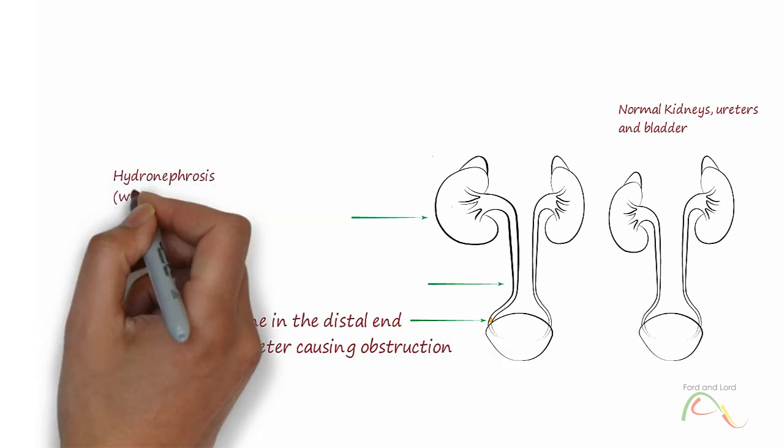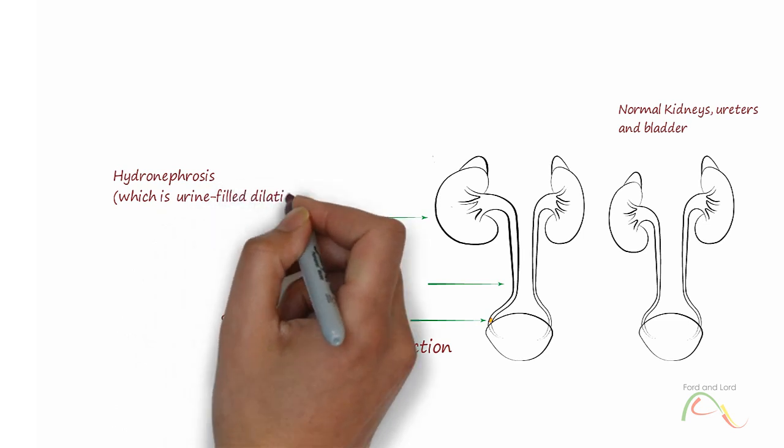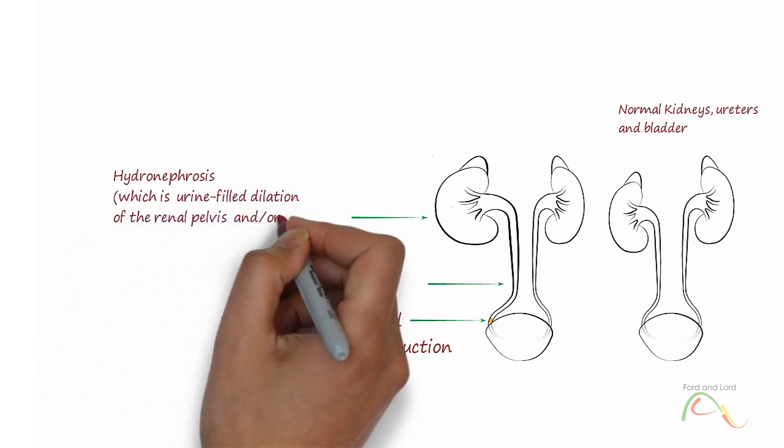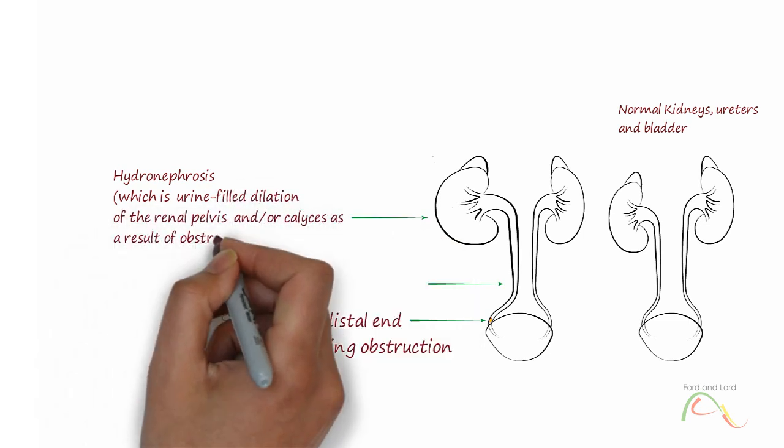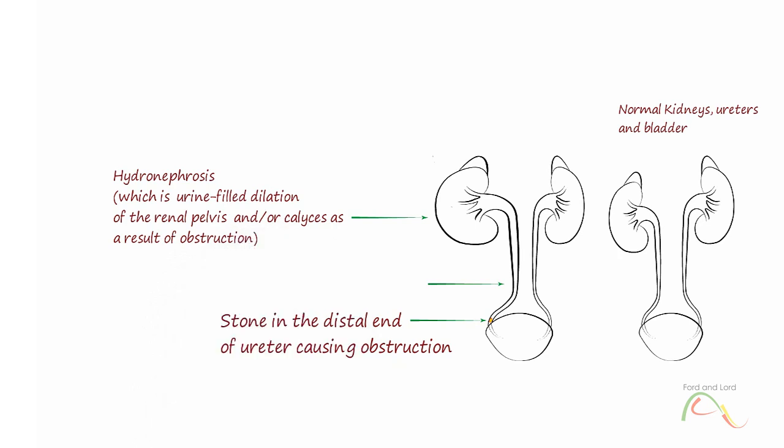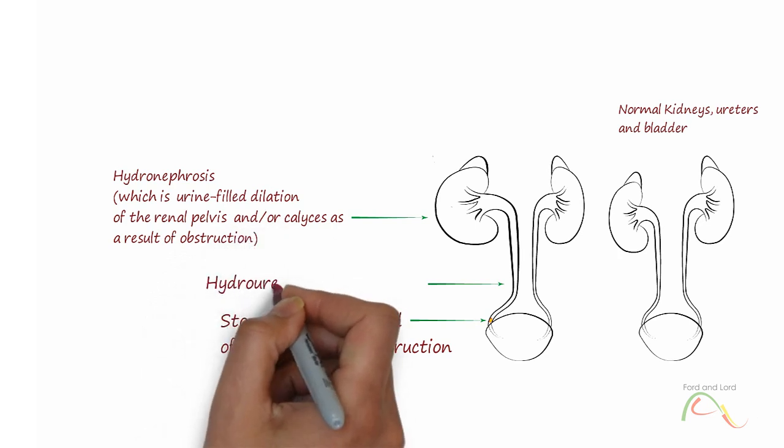The severity of pain does not relate to the size of the stone. Renal calculi can become impacted most commonly at the ureteropelvic junction, near the pelvic brim, or at the ureterovesical junction.